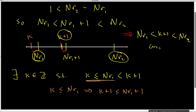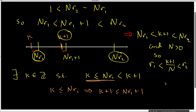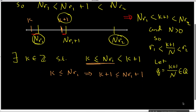Since N is bigger than 0, we can divide this inequality to get R1 is less than (K+1) divided by capital N, which is less than R2. In other words, we can let Q be the rational number (K+1) over N, and that will indeed be inside the rational numbers, and Q will be between R1 and R2.